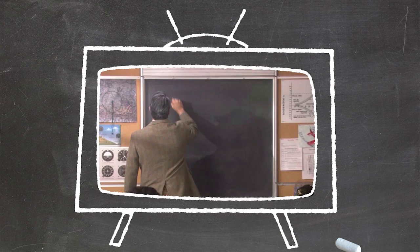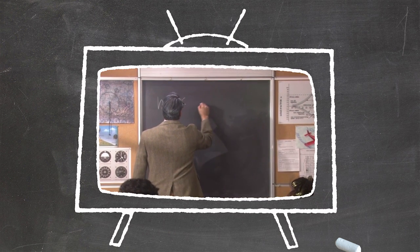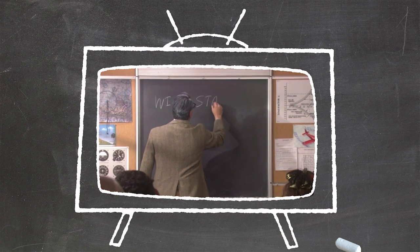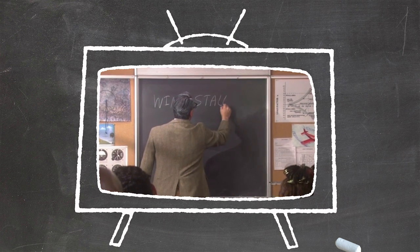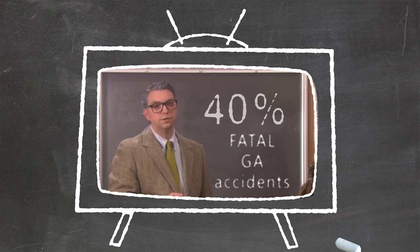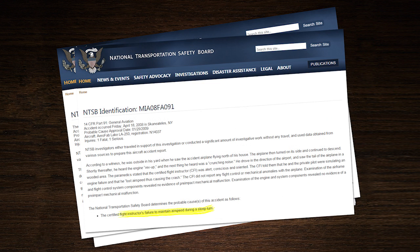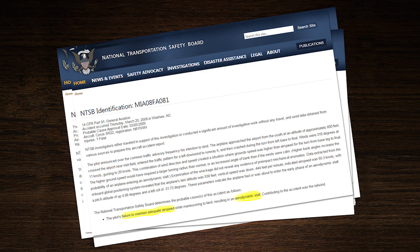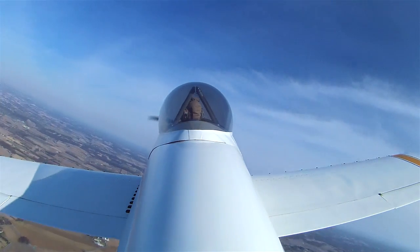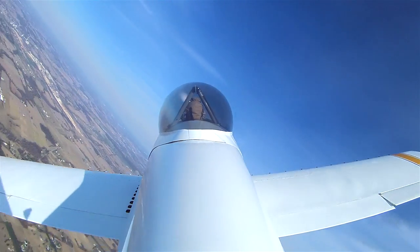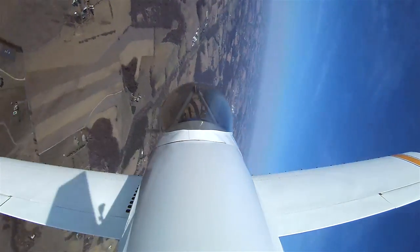Loss of control. We read about it, hear about it, and we talk about it. But what are we doing about it? According to the NTSB, 40% of fatal accidents in general aviation are attributed to in-flight loss of control. We can reasonably assume that none of these pilots intended to lose control of their aircraft. So why does this happen? In most cases, these pilots tested the aerodynamic limits of their wings and lost.